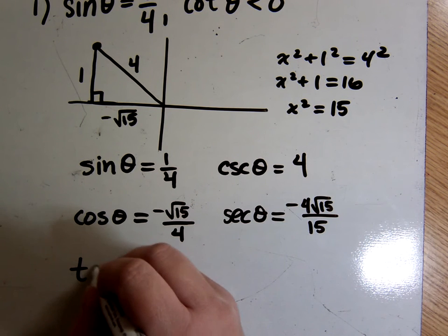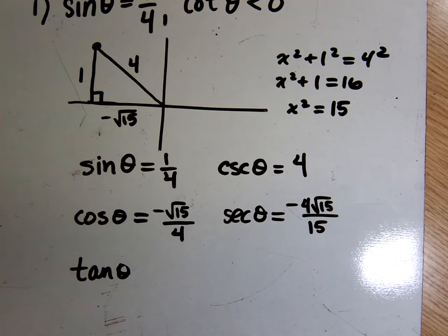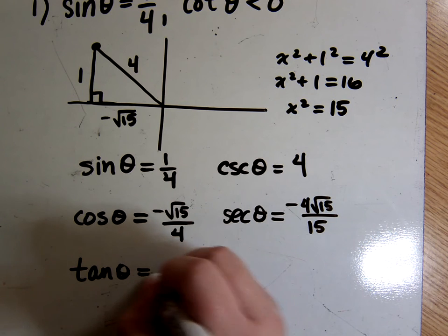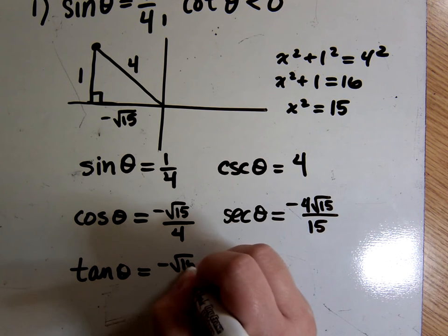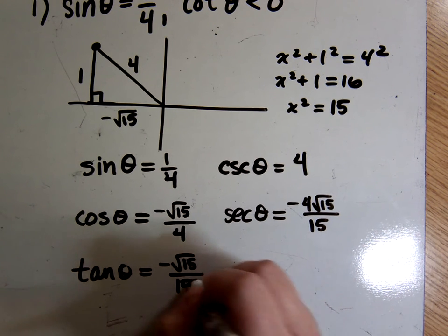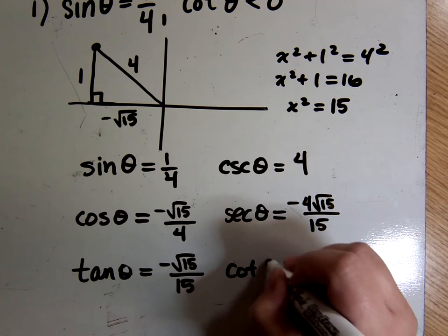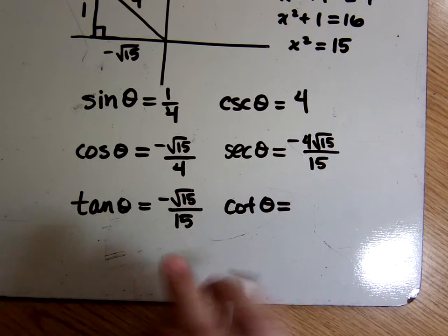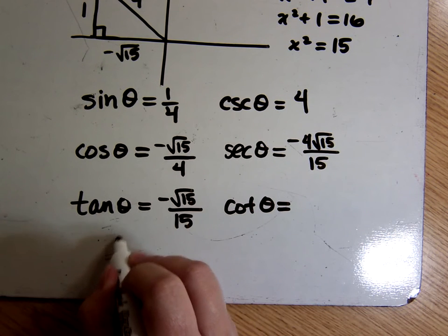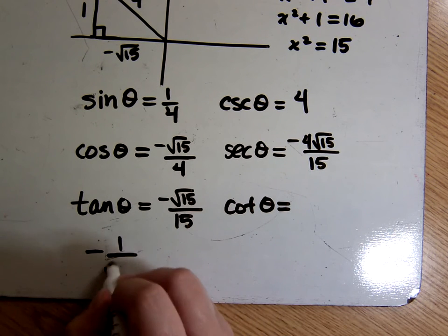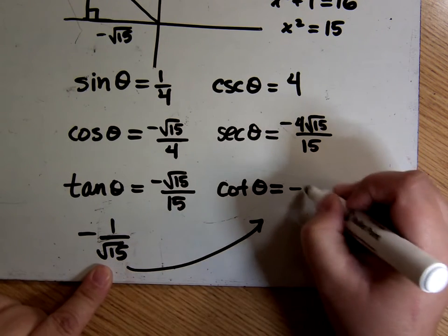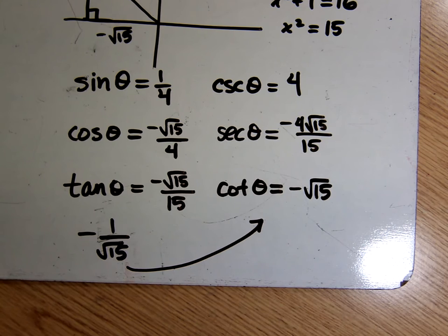Tangent is opposite over adjacent, so that's 1 over negative square root of 15. Rationalizing gives negative root 15 over 15. Cotangent is the reciprocal of tangent — before rationalizing I had negative 1 over square root of 15, so flipping that gives negative square root of 15. And those are all my answers for this problem.